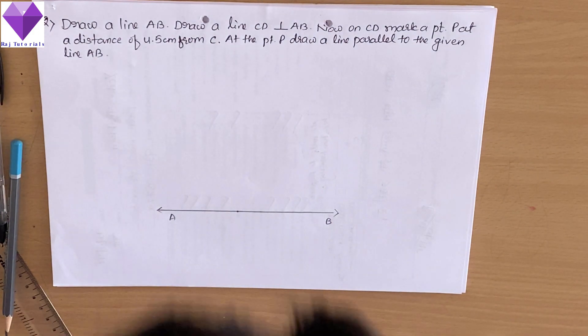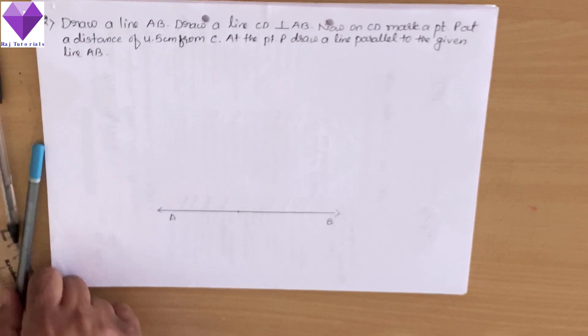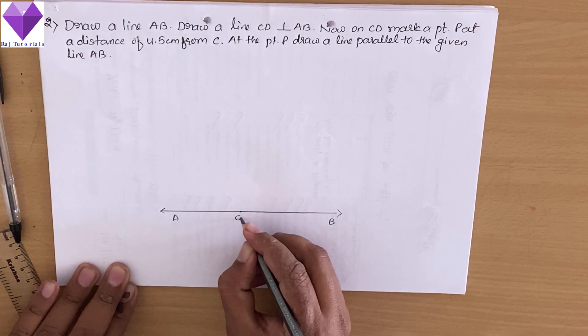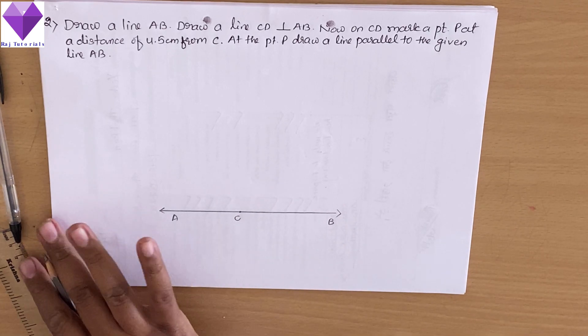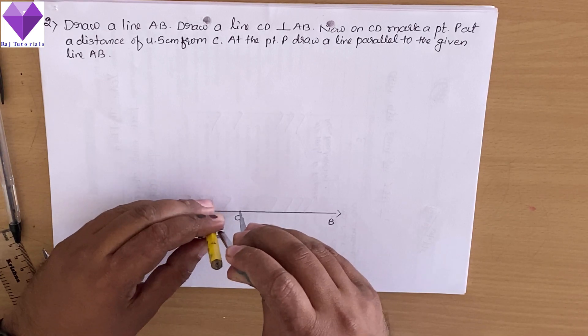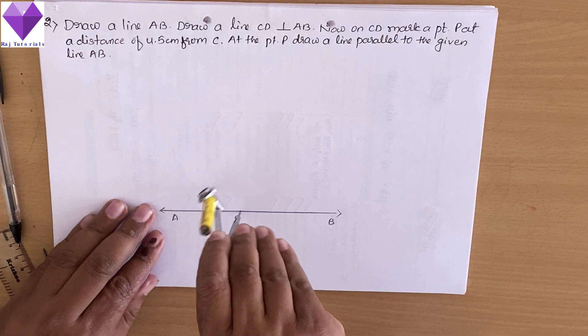Now on this line, I am taking a point C where I will be drawing a line perpendicular to AB. To do that, with C as center and any radius, I am drawing a semicircle.